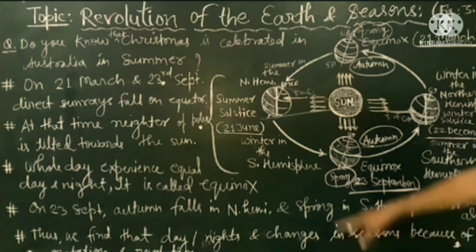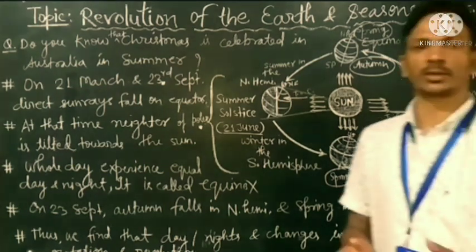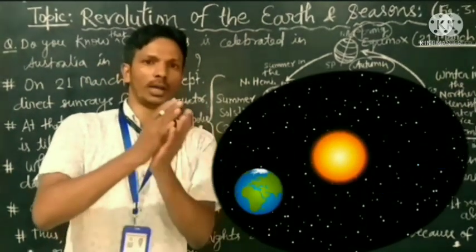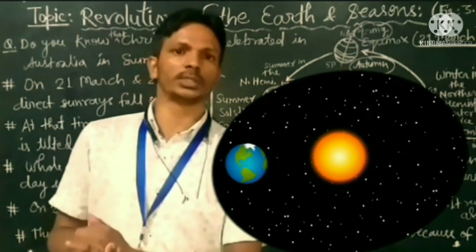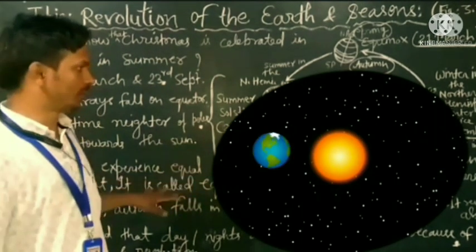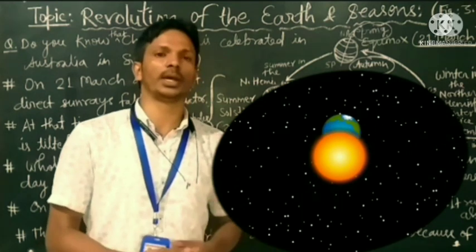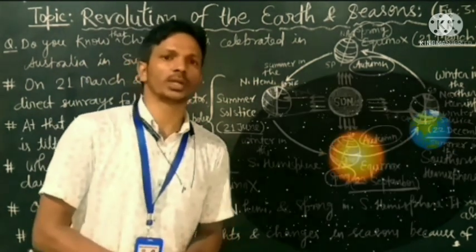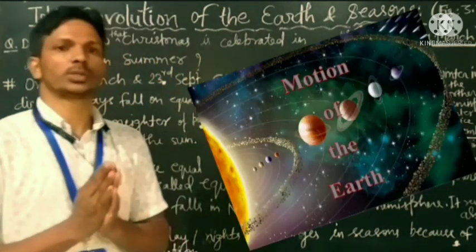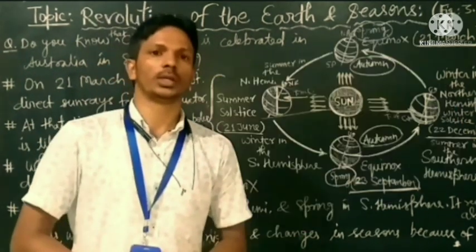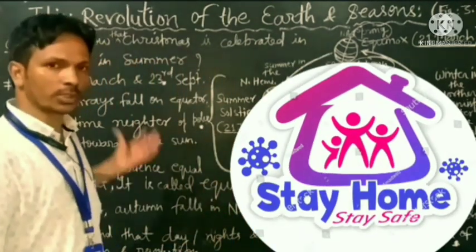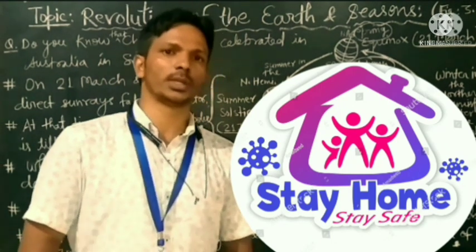So, students, days and nights and the changing of seasons on the earth — whether summer, winter, autumn, spring, or rainy season — are all because of the revolution and rotation of the earth. The chapter completely tells us about both motions: rotation and revolution in detail. This is the end of the video and the end of the lesson. If you have any doubts or problems related to the video or topic, you can ask or comment. Thank you very much.